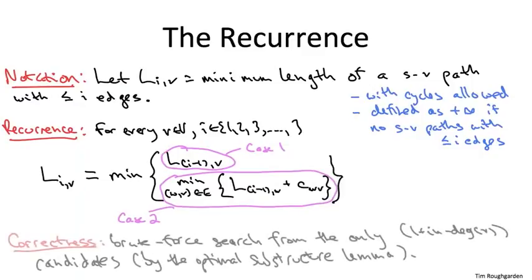Correctness as usual follows immediately from the optimal substructure lemma. We know these are the only candidates, and by the definition of the recurrence we pick the best one. Because our optimal substructure lemma has been proven whether or not G has a negative cycle, this recurrence is correct for all positive values of I, whether or not G has a negative cycle.